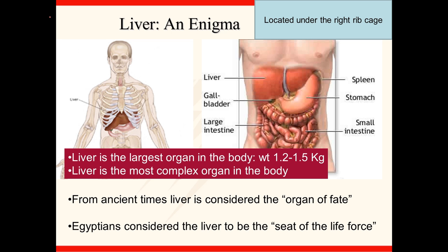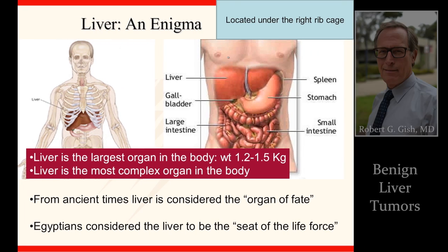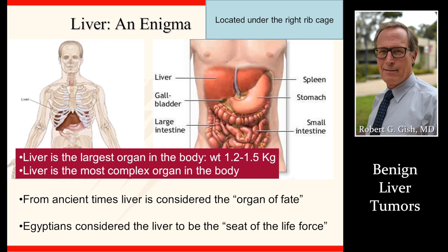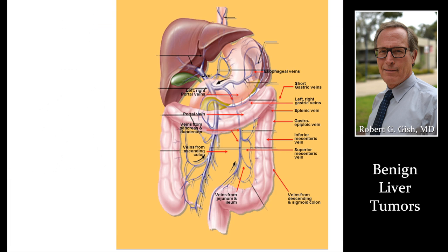Let's start by talking about where the liver is located. The liver is in the right upper part of the abdomen, connected to the spleen, above the stomach, below the right ribcage. It's a very important organ with 200 to 300 functions every day. This picture gives you a better view of the liver, spleen, gallbladder, blood vessels, relationship to the stomach, and the pancreas.